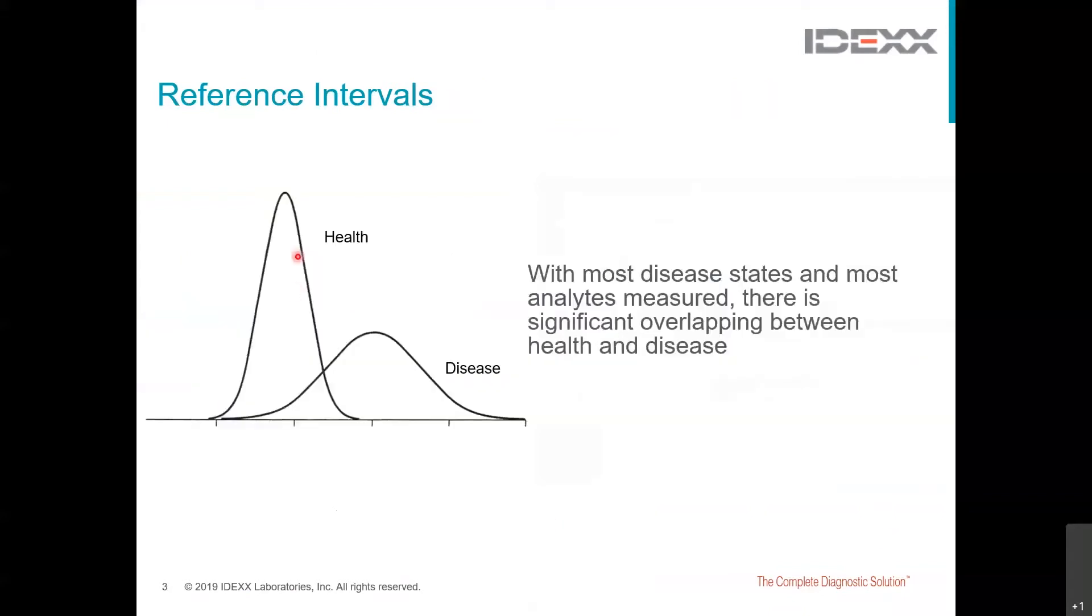Therefore, we can have normal animals that will have abnormal results and conversely, we could have ill or sick patients that will have normal results. So this raises the question of whether a result within the reference interval is in fact normal for that patient, because sometimes it's the lack of an abnormality that raises our suspicion for disease. For example, patients with hypoadrenocorticism usually lack the presence of a stress leukogram we would typically expect to see in sick patients. Remember, we always need to consider all diagnostic test results in relation to our patient's history and physical exam findings. So we ultimately need to think to ourselves, do they make sense for this particular patient?